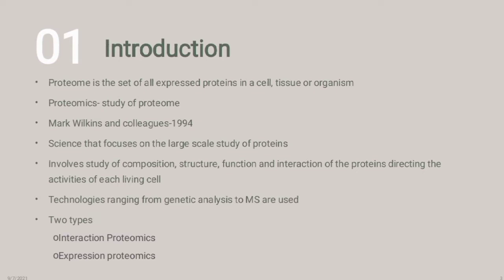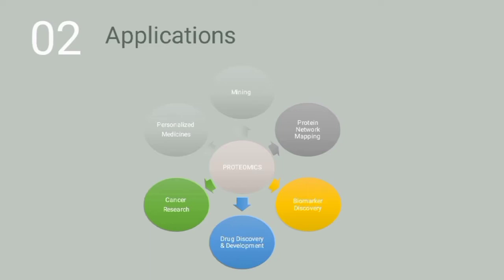There are two types of techniques or technologies used to analyze protein expression. The first is expression proteomics, where you detect the expression of proteins. The second is interaction proteomics, where you use ligands or other molecules that have a high affinity towards a particular protein to study their interactions.